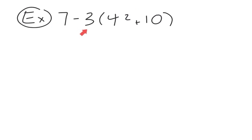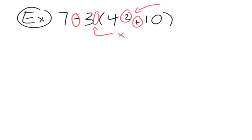In our next question we have 7 minus 3(4² + 10). There are a lot of operations here, so let's break this down step by step. We have subtraction, addition, a number in front of brackets which means multiplication, an exponent of 2 on the 4, and a pair of brackets to consider.